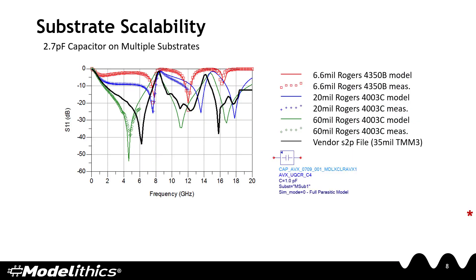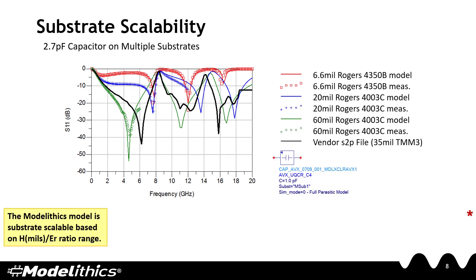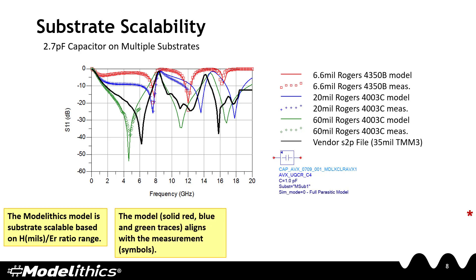A key feature of Model Ethics models is their substrate scalability. A model's substrate scalability is evaluated based on the H over ER ratio range — this is the height of a substrate divided by its dielectric constant. To take advantage of substrate scalability, the user simply needs to define the substrate in their schematic, and model performance will change as these parameters are varied.